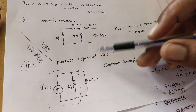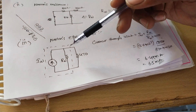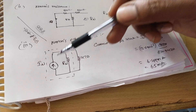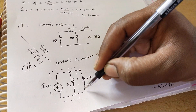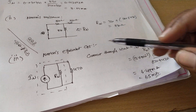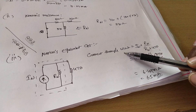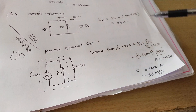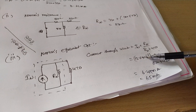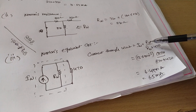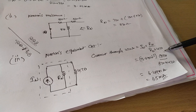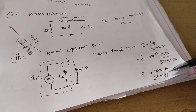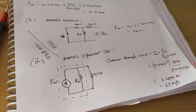The Norton's equivalent circuit consists of In, Rn, and the 470 ohm load. To calculate the current through the 470 ohm resistance: In = 13.6 milliamps, Rn = 870 ohm (opposite of 470). Using the current division rule: In × Rn / (Rn + 470) gives 6.5 milliamps. We will now verify this practically.